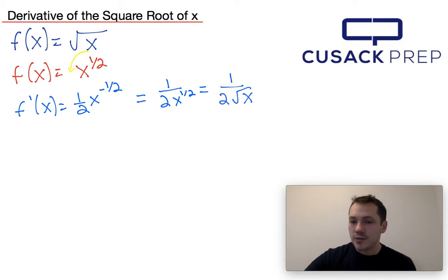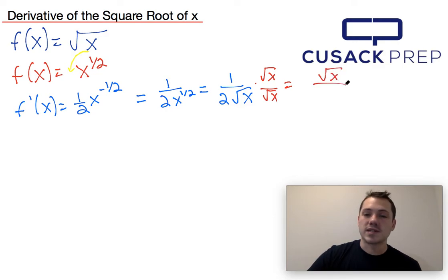And finally, another possibility is where you actually rationalize the denominator because you don't want the square root of x in there. You would do that by multiplying this by root x over root x. So you would end up with the square root of x over 2x.